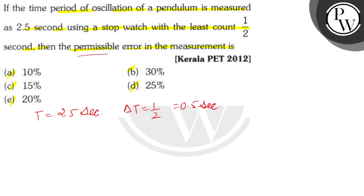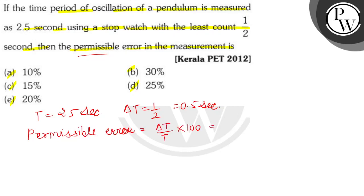Here we find permissible error. When we find permissible error, we use delta T divided by T, multiplied by 100. So the delta T value is 0.5 divided by 2.5, into 100.